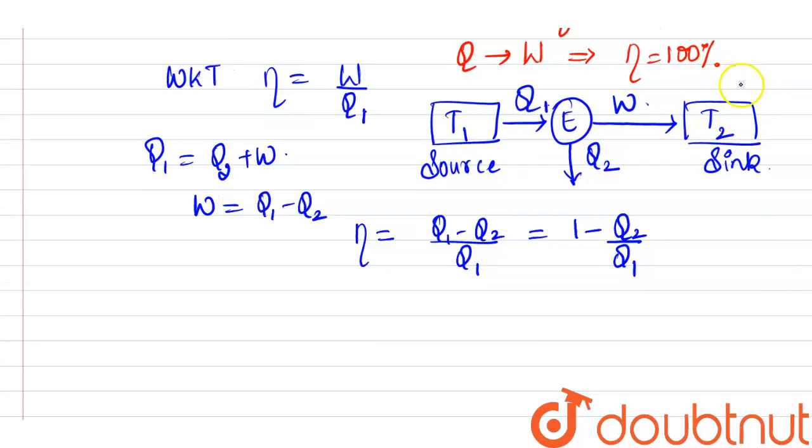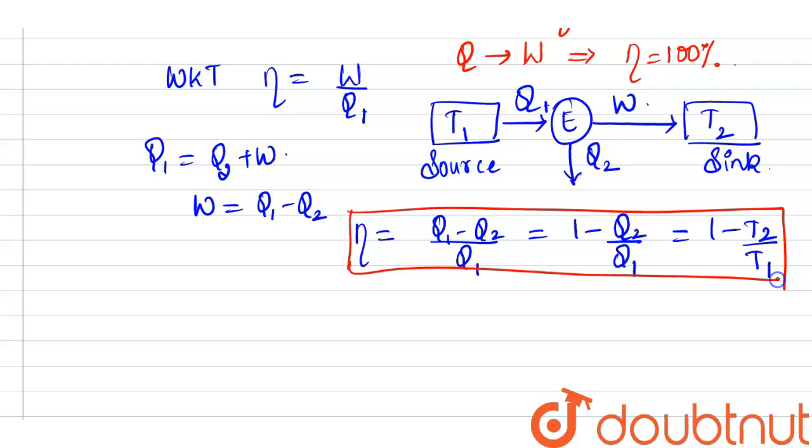So, the heat energy which is rejected to the temperature will be our temperature T2 and this will be our temperature T1 by Carnot's theorem. So, our efficiency expression will become 1 minus T2 by T1 where T2 is the sink temperature and T1 is the source temperature.